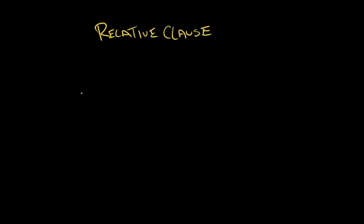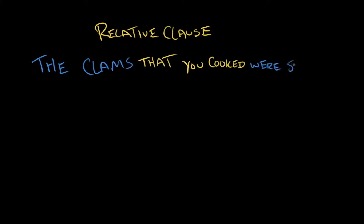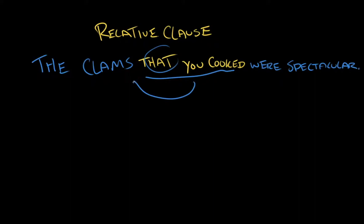A relative clause is a clause that pretty much occurs in the middle of a sentence. For example: 'The clams that you cooked were spectacular.' I've highlighted in yellow this relative dependent clause. What the word 'that' is doing is making this entire clause modify 'clams.' 'You' is the subject, 'cooked' is the verb, and 'that' is the object — all referring back to 'clams.' Because of the 'that' and because it's referring back to a different part of the sentence, 'that you cooked' is not an independent clause and would not be a sentence on its own.